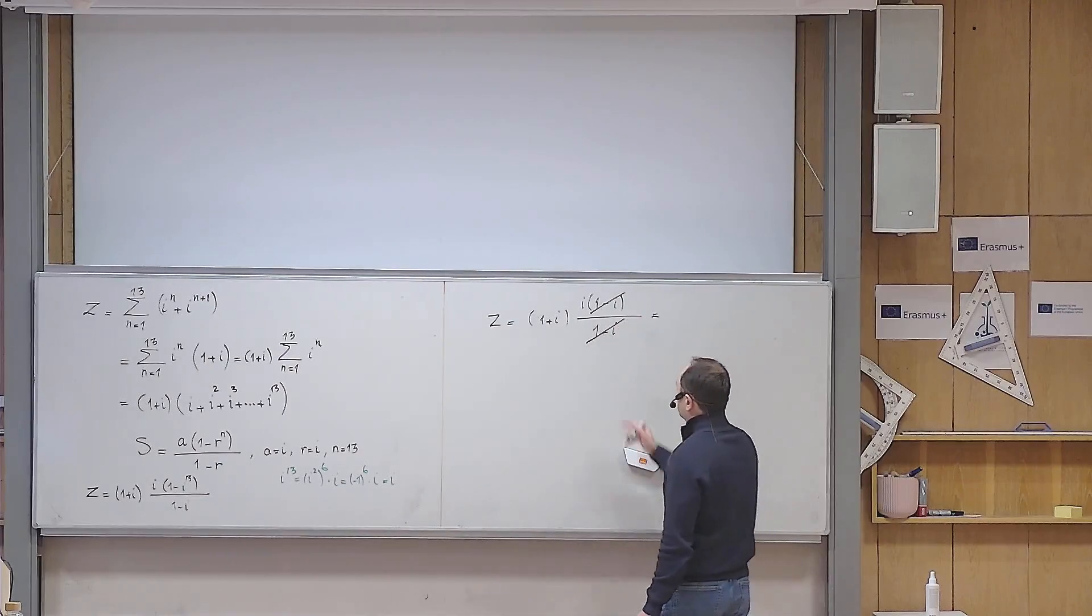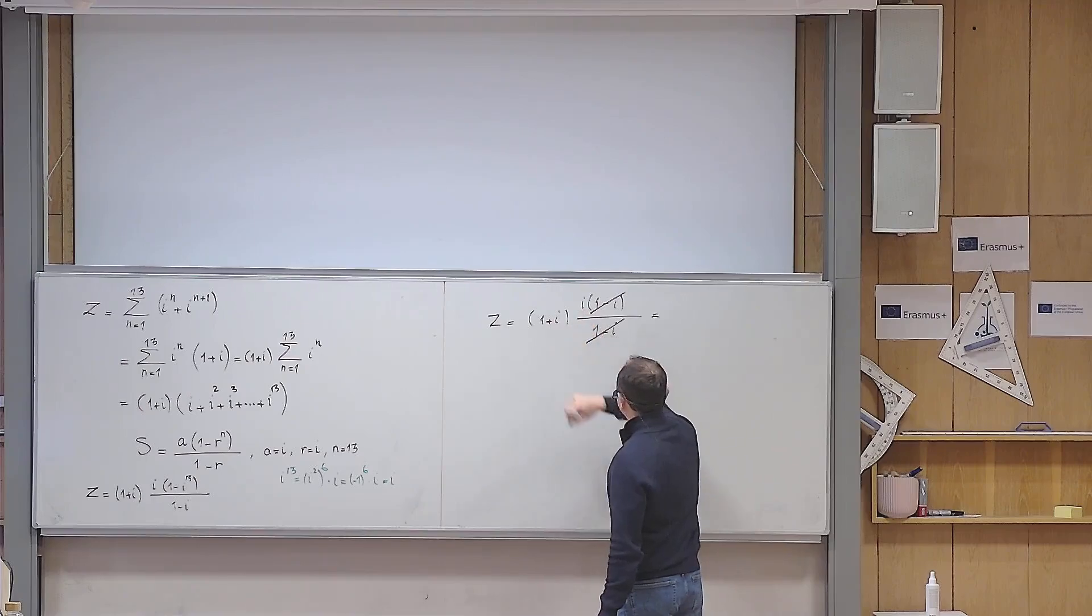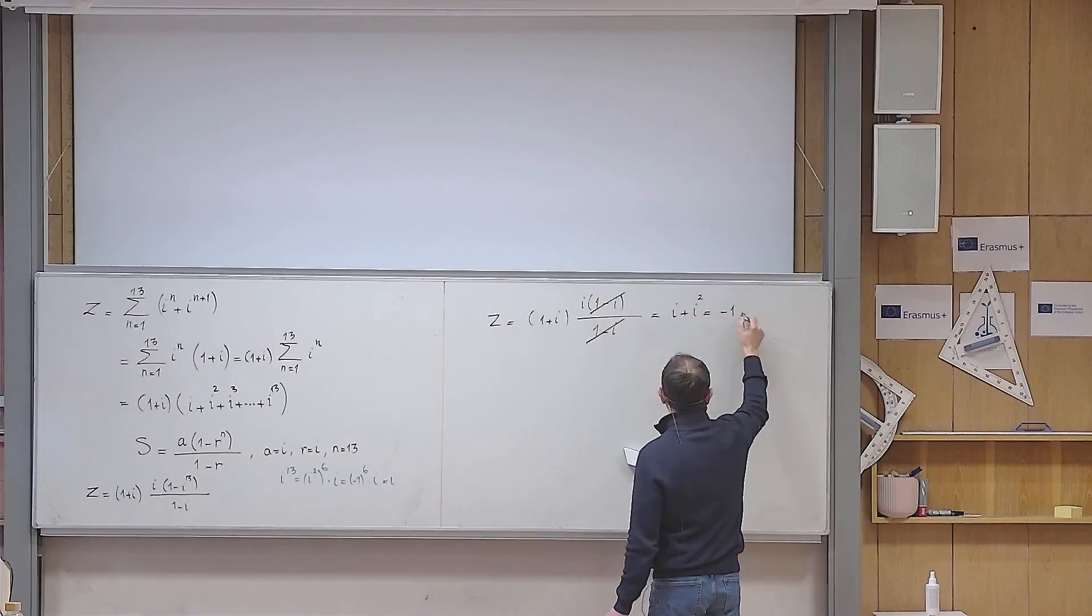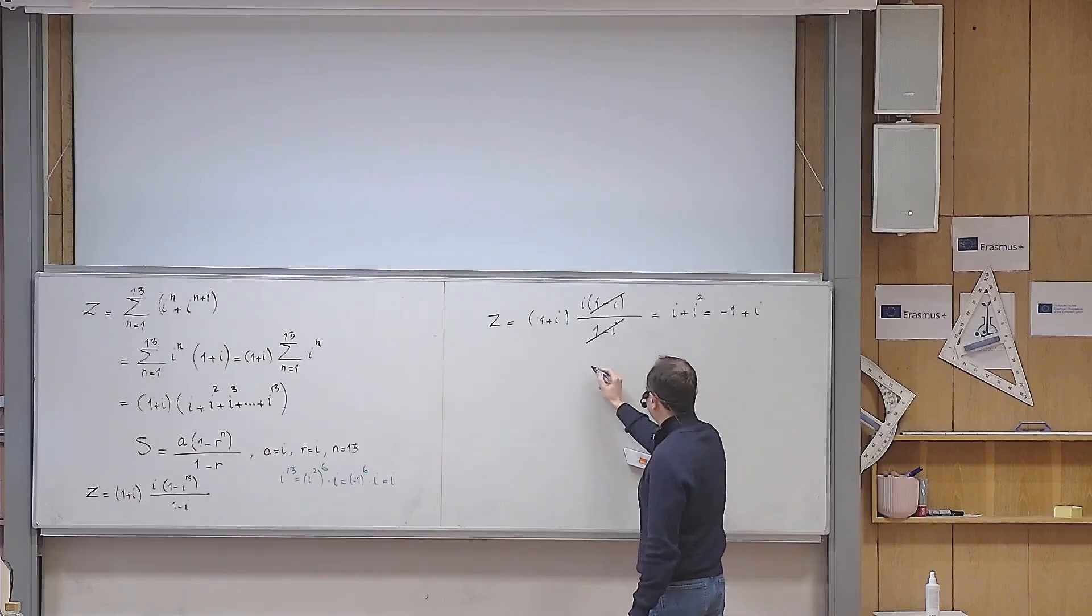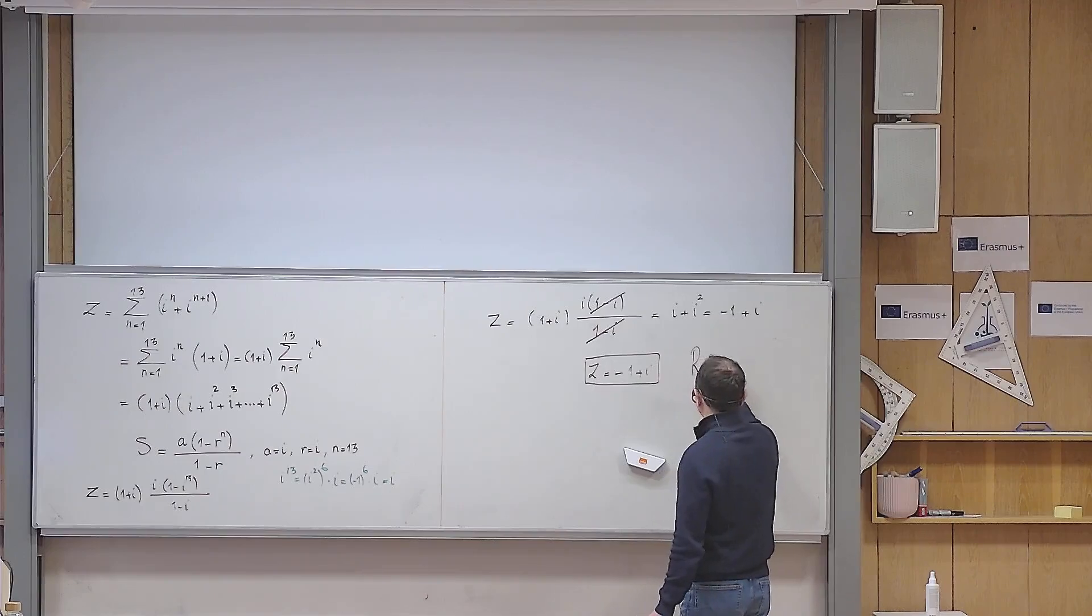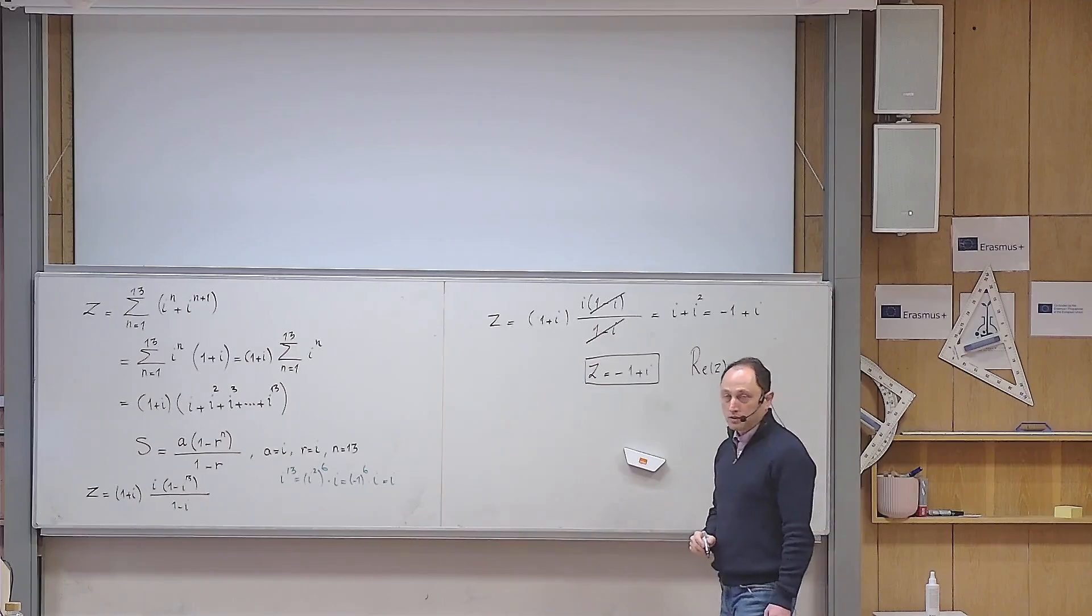I have i and I multiply it there. So it becomes i plus i squared. But i squared is minus 1, and this is plus i. So the complex number z, after being simplified in a standard form, it becomes simply this number. And then if I ask you what is the real part of z, of course that is equal to minus 1.